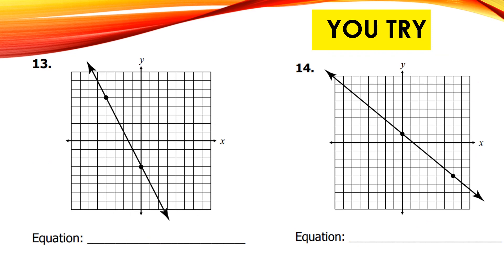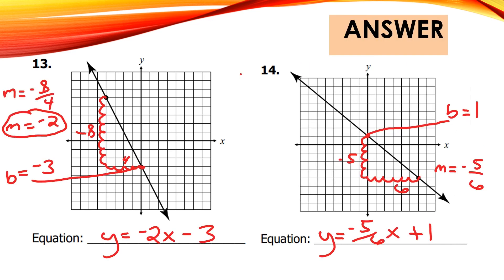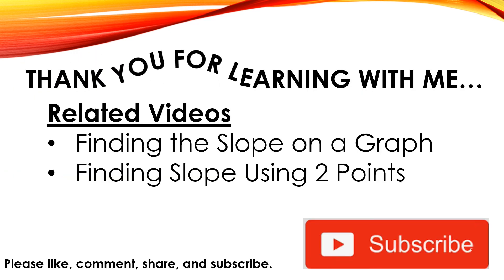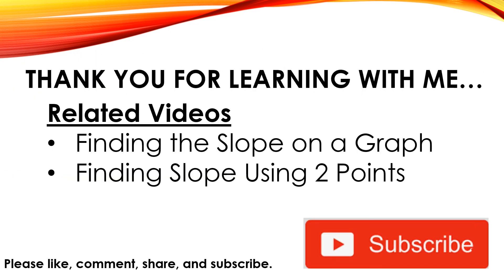I have two more problems I'd like you to try on your own just to make sure you really understand how to write these equations from a graph — please pause the video and try these last two problems. I have the answers here for you to check. We've reached the end of our lesson. Thank you for learning with me. Related videos are finding the slope on a graph and finding slope using two points. Please like, comment, share, and subscribe.